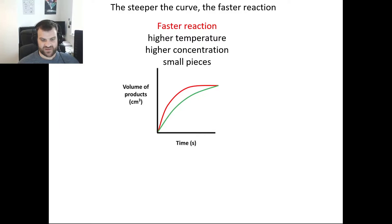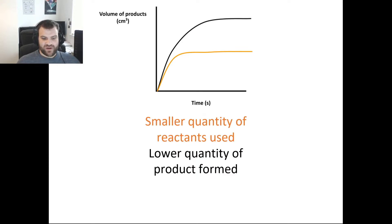The green one at the bottom is a slower reaction where we could use a lower temperature, lower concentration, or use larger pieces of our reactant. We can also be asked about a case where we have produced less of the products than in the first graph. When we get a smaller quantity of reactant used, we will end up with a smaller quantity of product being formed, which is what we've got in this case.